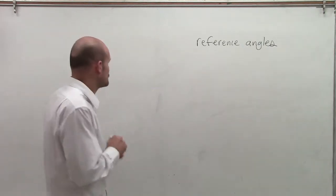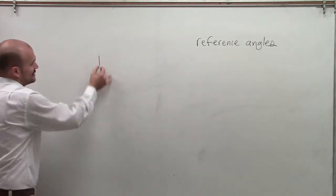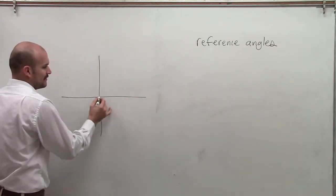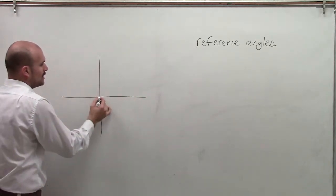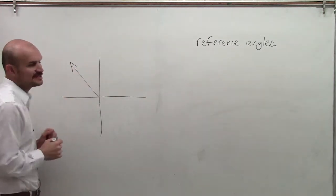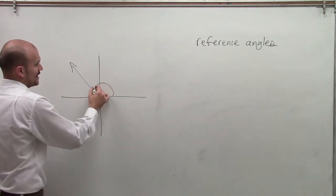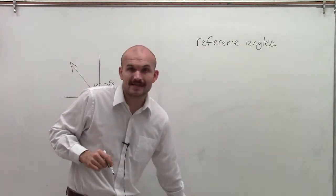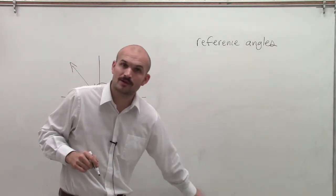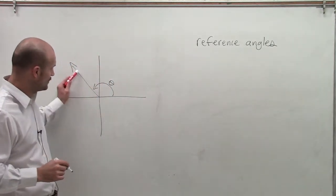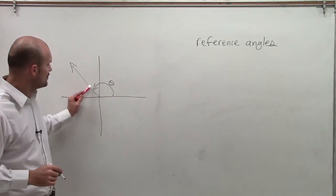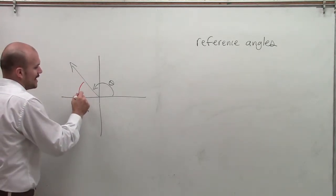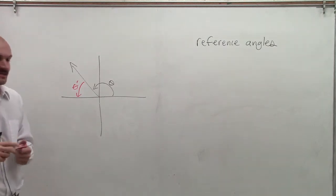Reference angles are defined when given an angle that's in standard form. Standard form means we have an initial side and then a terminal side. Our reference angle is going to be the acute angle from our terminal side to our horizontal axis, which in this case is going to be our x-axis.